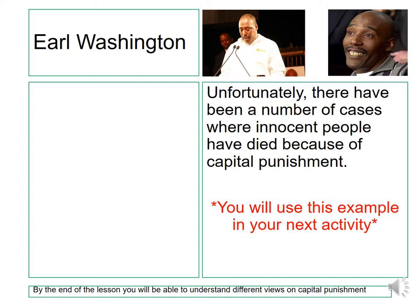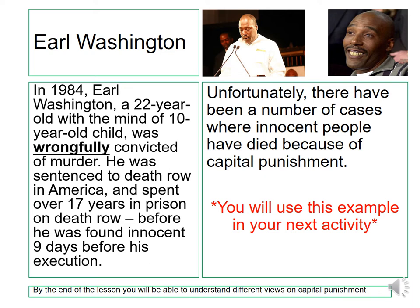Earl Washington was a 22-year-old man with the mind of a 10-year-old, so he was already disadvantaged. He was wrongfully convicted of murder and sentenced to death row in America, spending over 17 years in prison before being found innocent just nine days before his execution. If he had not been found innocent, he would have been killed by the death penalty. I want you to use this example in your next activity — why might people be against the death penalty because of this?